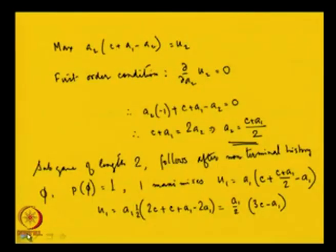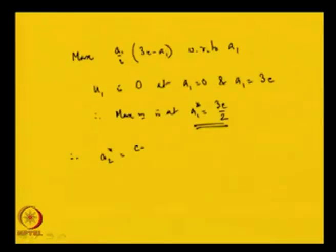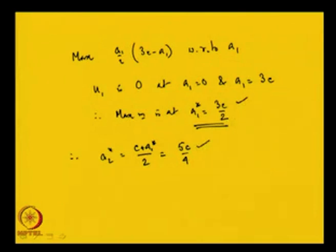This is how we solve games with infinite, continuous action sets that are sequential, through backward induction. In this lecture we have looked at the backward induction method for solving extensive games of perfect information, and this is something we shall discuss in the next class as well. Thank you.